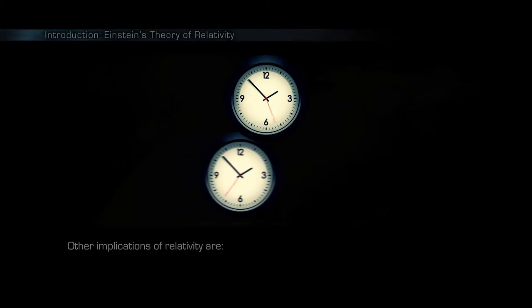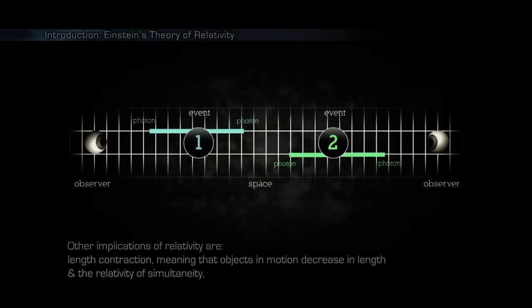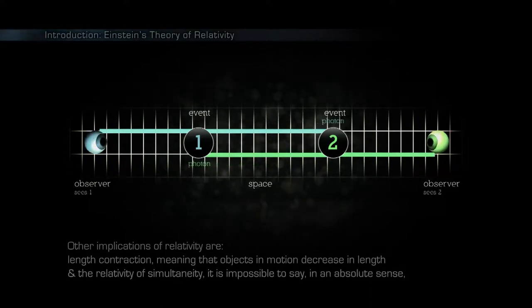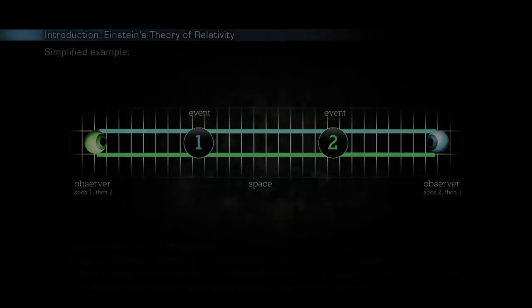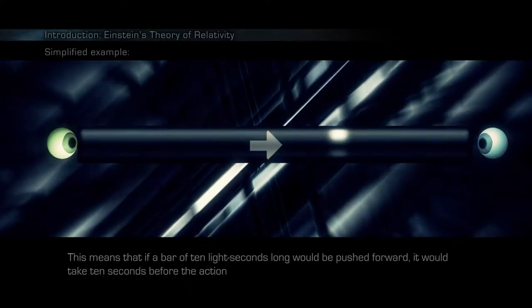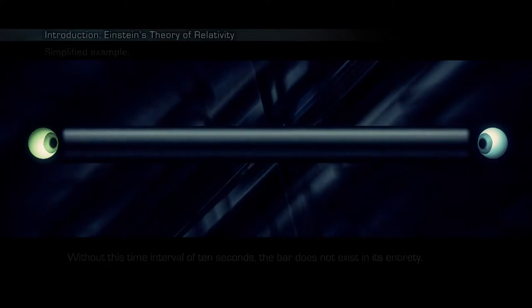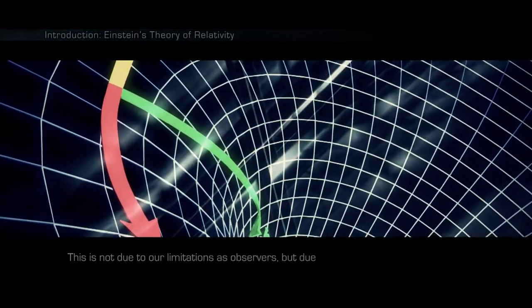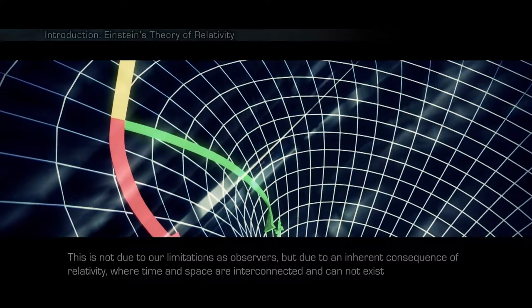Other implications of relativity are length contraction, meaning that objects in motion decrease in length, and the relativity of simultaneity. It is impossible to say in an absolute sense whether two events occur at the same time when they are separated in space. Nothing can travel faster than the speed of light. This means that if a bar of 10 light seconds long would be pushed forward, it would take 10 seconds before the action can take place on the other side. Without this time interval of 10 seconds, the bar does not exist in its entirety. This is not due to our limitations as observers, but due to an inherent consequence of relativity, where time and space are interconnected and cannot exist without each other.